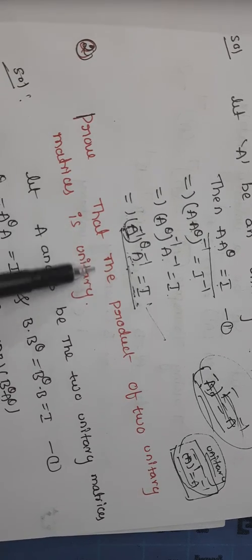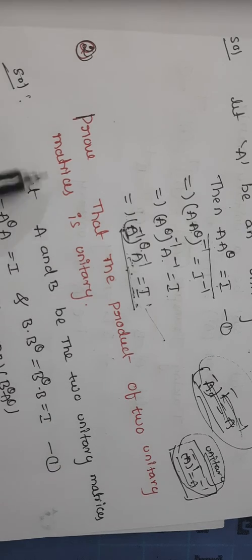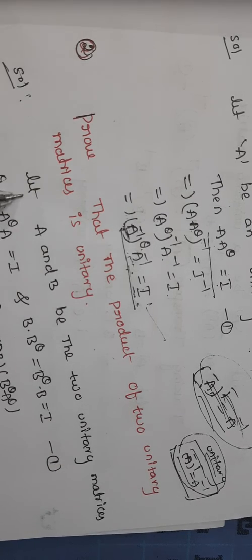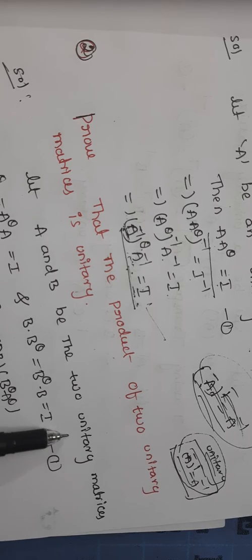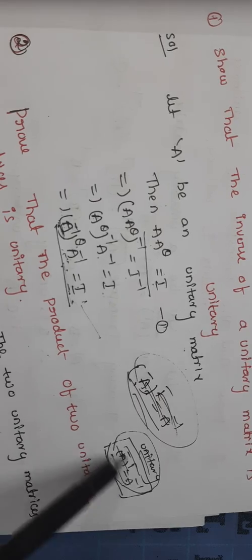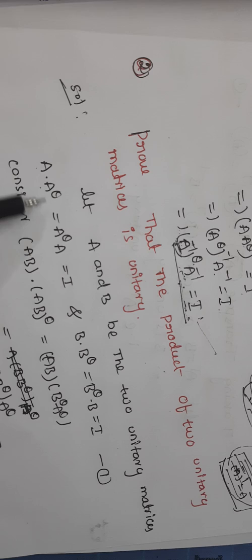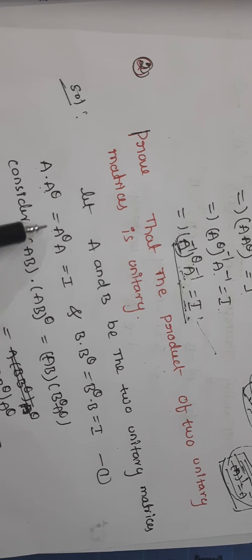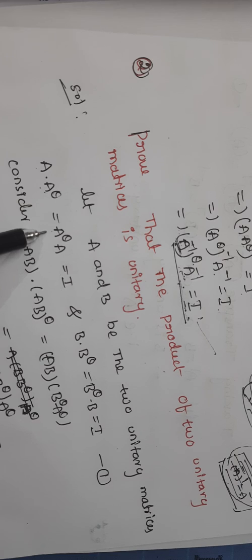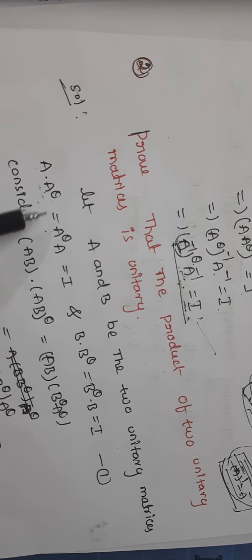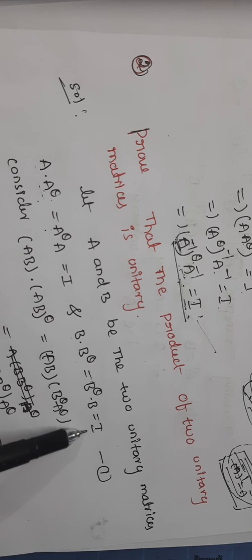Prove that the product of two unitary matrices is unitary. Product of two unitary matrices. A and B are two unitary matrices. Unitary matrix means, sorry for that. Unitary means A A transpose, I mean A power theta, A power theta A equal to I. A power theta means A bar whole transpose equal to A. That is Hermitian. I will write it simply. Similarly, I will write B.